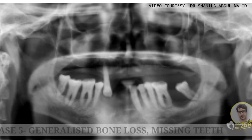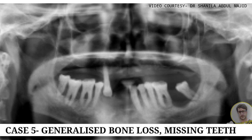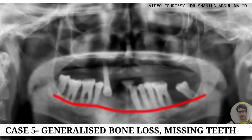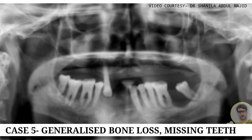The next case scenario is observed for periodontal cases, where you can see there is severe generalized bone loss in the mandibular region and missing teeth have also been observed. You can see here that there is generalized interdental bone loss, more of a horizontal pattern, in the mandibular region.